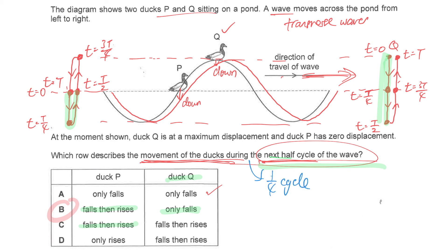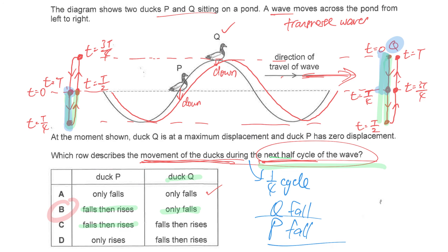What if we modify the question and ask for a quarter of a cycle? Using the same technique: Q goes from the highest point down to the undisturbed position in a quarter cycle, so Q falls. For P, a quarter of a cycle later it also falls. So if they ask for a quarter of the cycle, both P and Q will fall, and A would be the answer. Hopefully whichever kind of question they ask, you should be able to solve it.